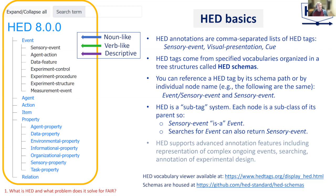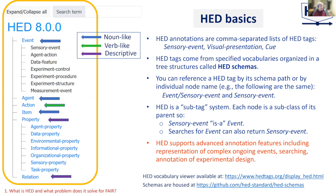Looking at the schema structurally, there are basically three kinds of subtrees. There are noun trees like event, agent, and item. Then there is a verb tree with action. And finally, there are descriptive tags which are under property and relationship. HED supports advanced annotation features such as the representation of ongoing events and searching annotations based on experimental design.